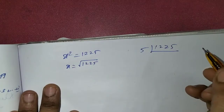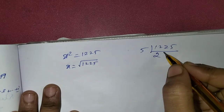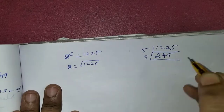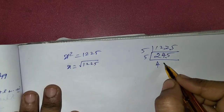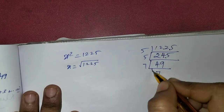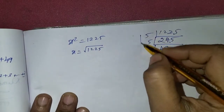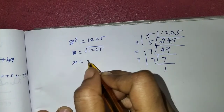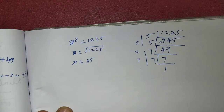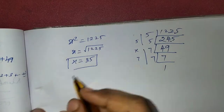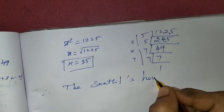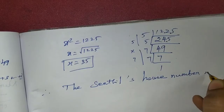Now we find the square root of 1225. Using prime factorization: 1225 equals 5 squared times 7 squared. So the square root of 1225 equals 5 times 7 equals 35. Therefore Sendhil's house number is 35.